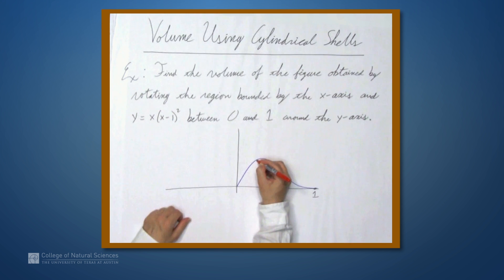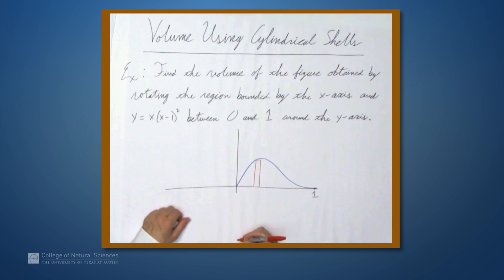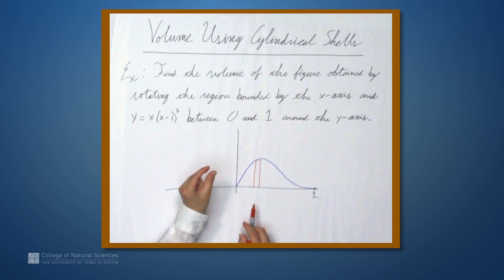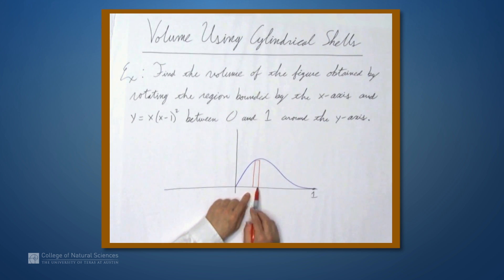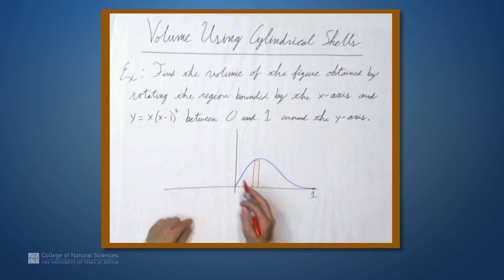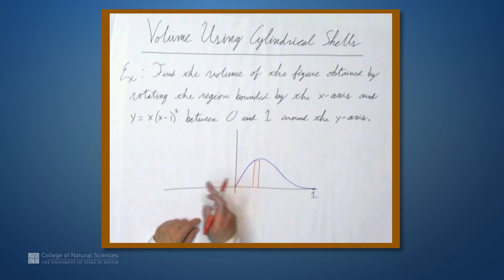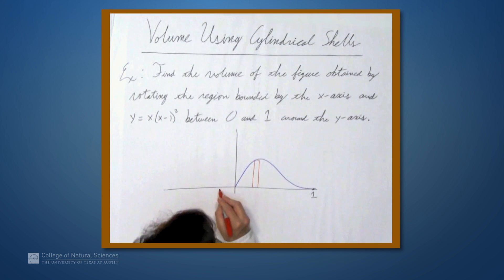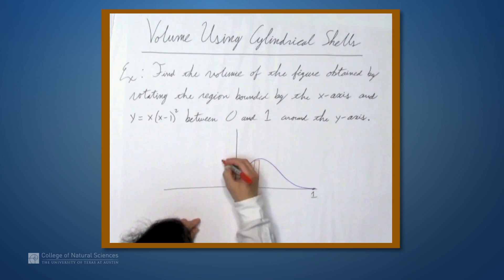So we avoid all these problems by not using rings, but instead cylindrical shells. Imagine we have a little rectangle here, and it's incredibly narrow. Its width for us is going to be dx, and we rotate this thing around the y-axis along with the function. So we draw the corresponding rectangle here.